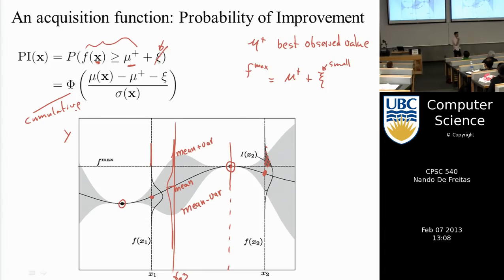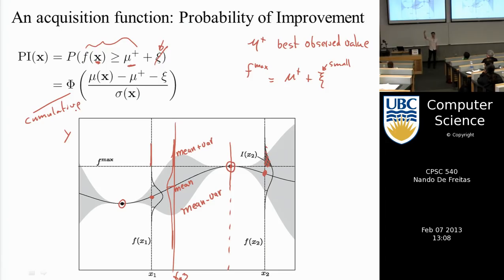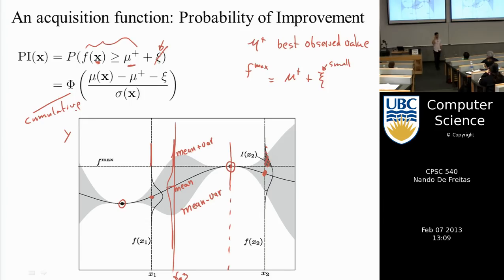Even though Probability of Improvement is the least used in practice, in situations where you know the best reward you can possibly get, it turns out to be extremely powerful compared to other criteria. It's rare when you know that, but it's important to keep in mind. A student asks about two points with the same mean as mu-plus but different variances — you pick the one with larger variance, because you're trying to maximize both mean and variance.